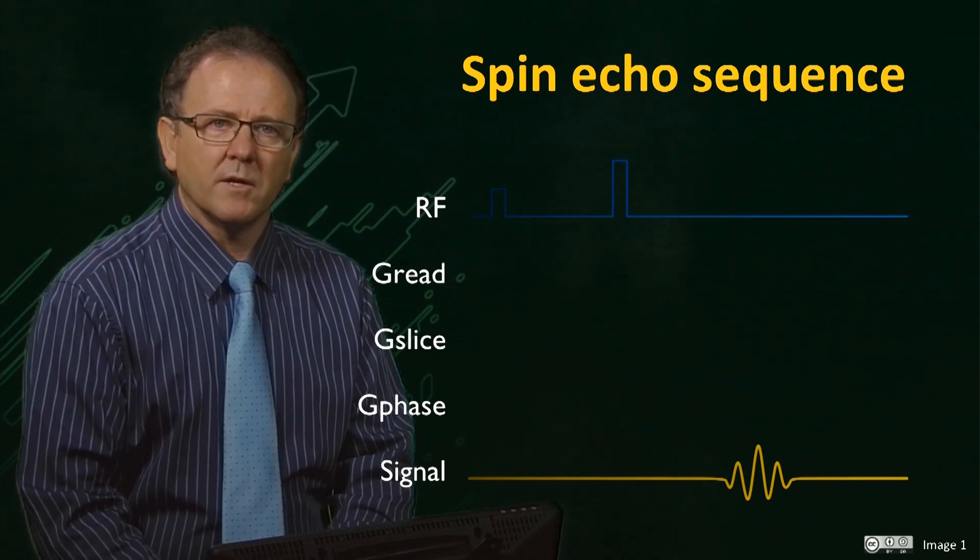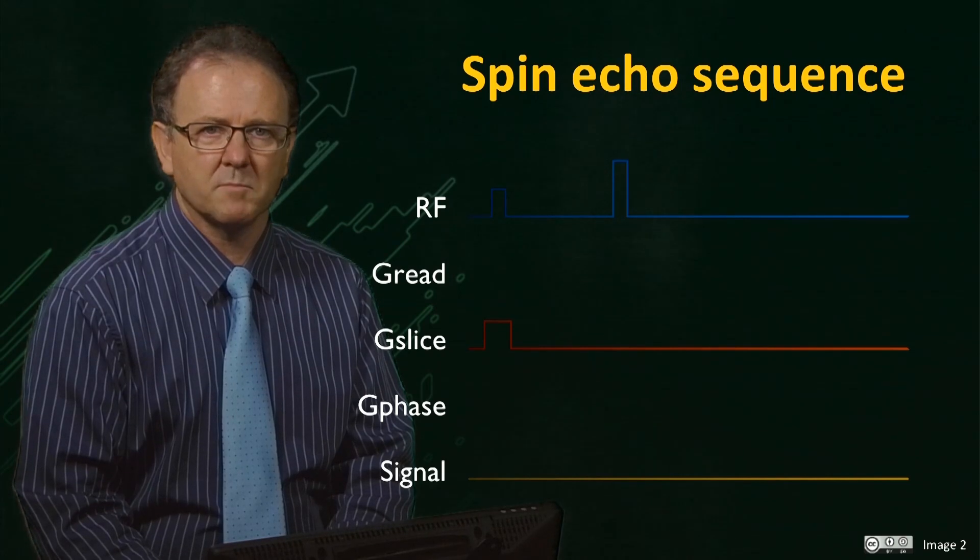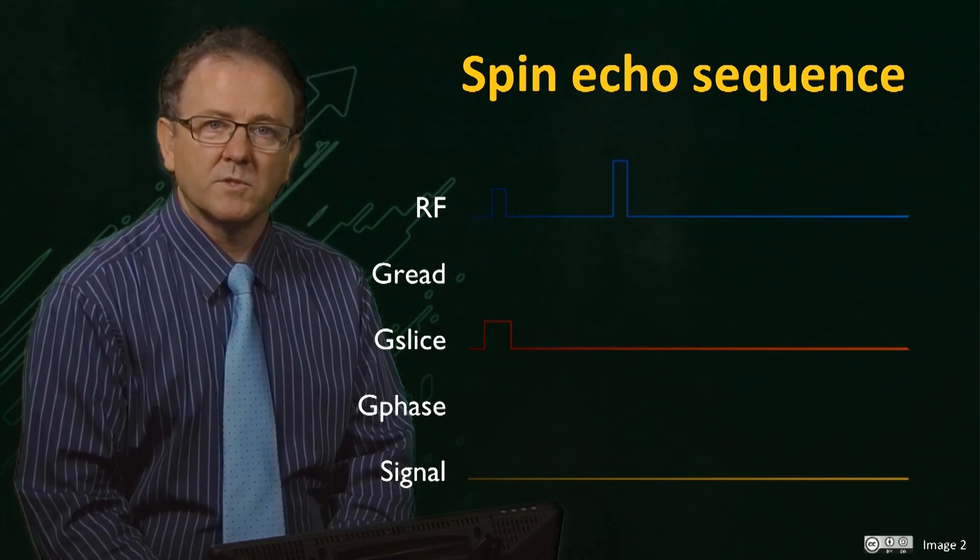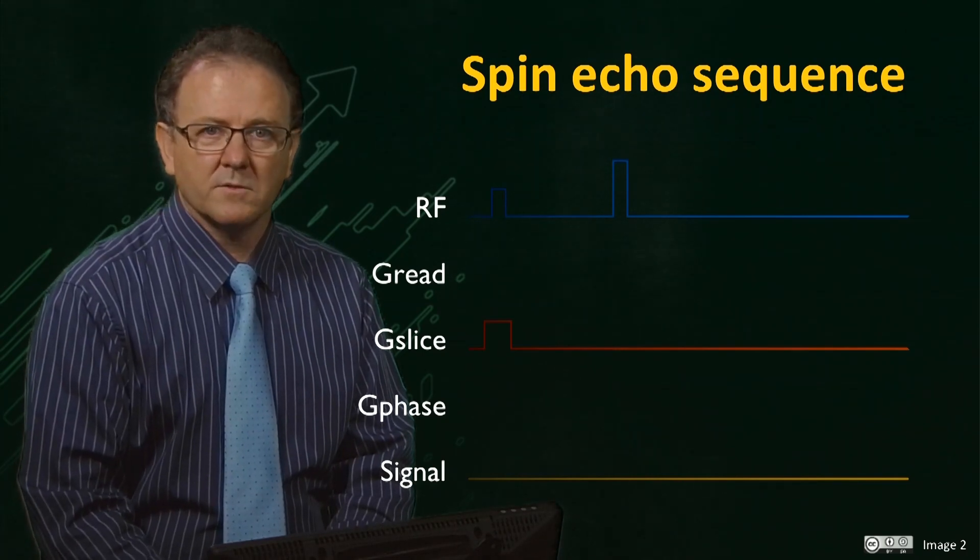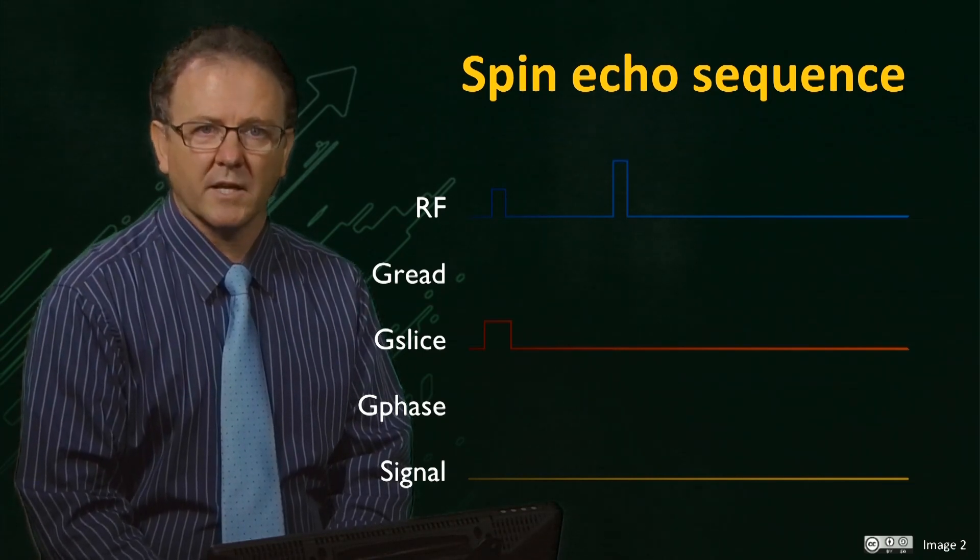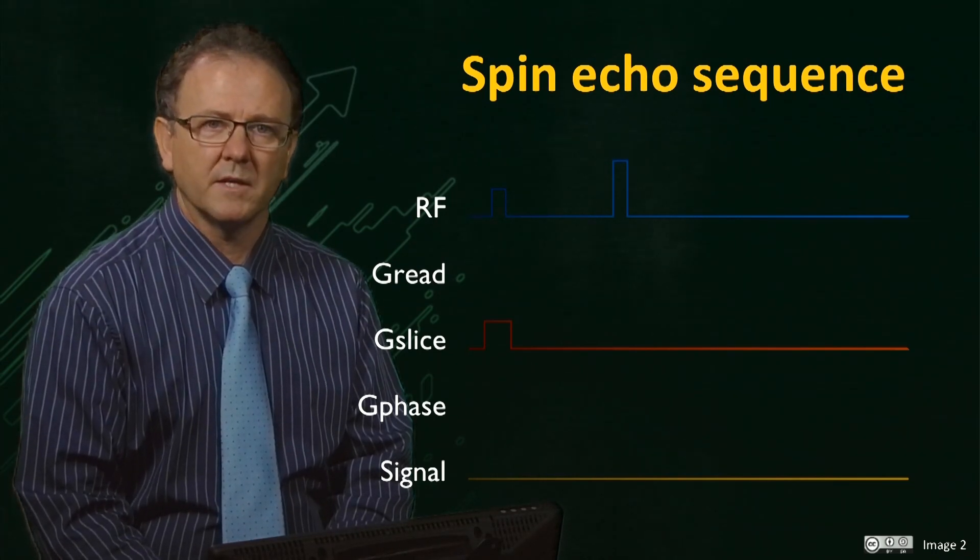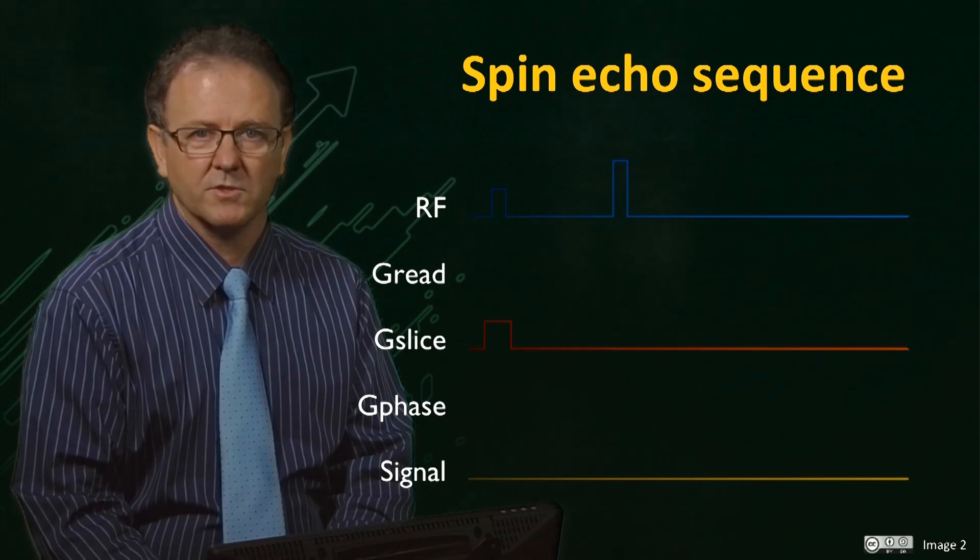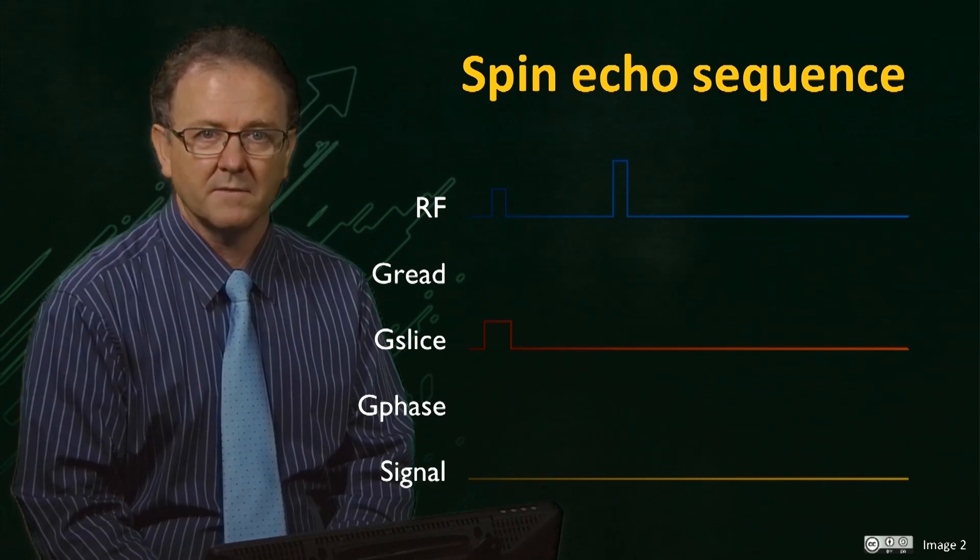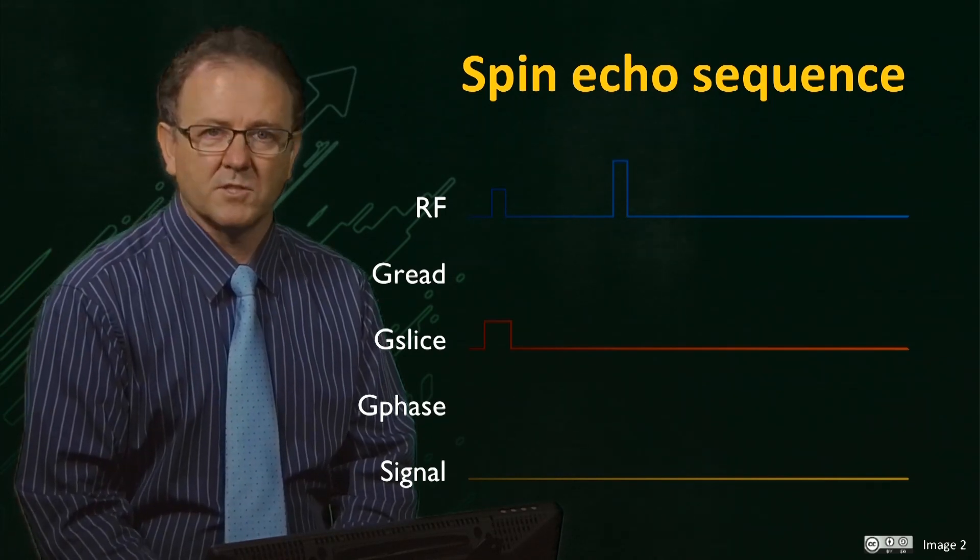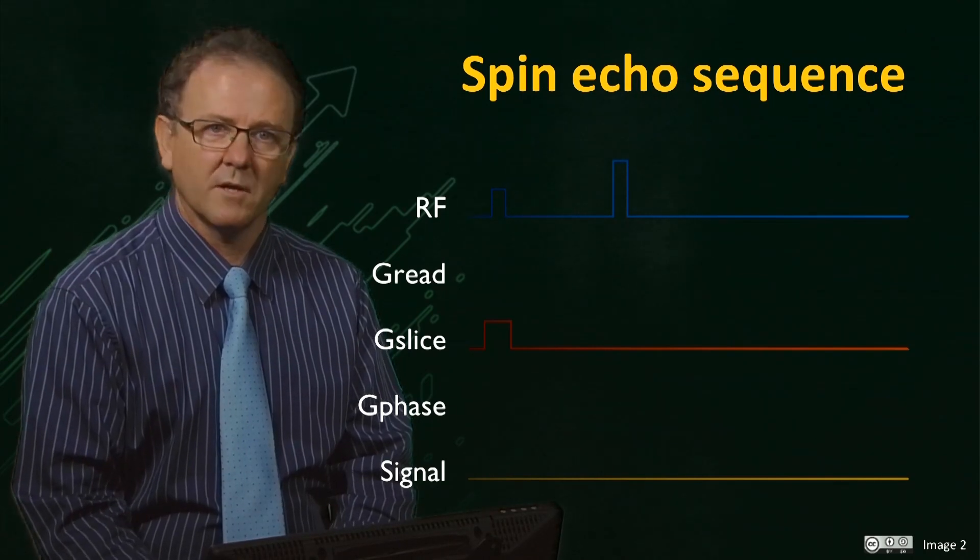The slice gradient is applied during the 90 degree pulse to select the desired slice of spins. However, we observe that the spin echo signal has now disappeared. This is because, although the slice gradient allows selection of a slice of spins, the gradient itself represents a strong linear magnetic field variation across the slice, and so the transverse spin vectors within the slice are rapidly dephased. Since there is no reversal of this dephasing after the 180 degree pulse, no echo will form.